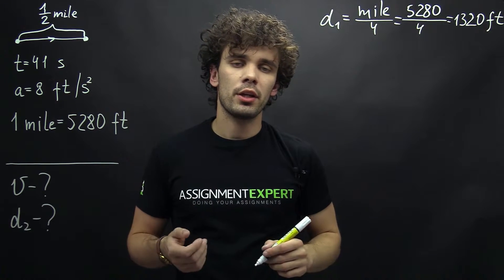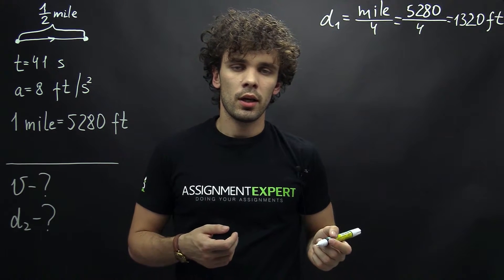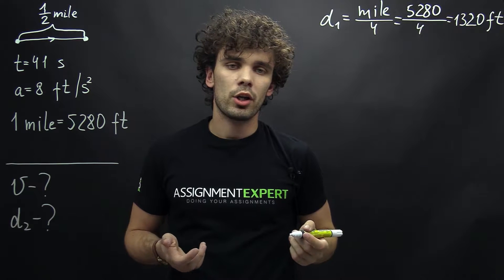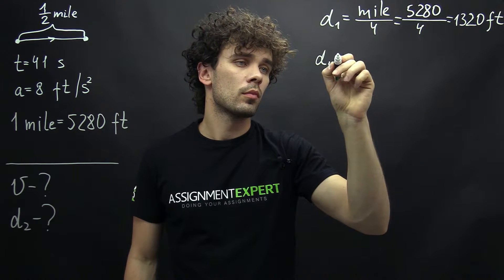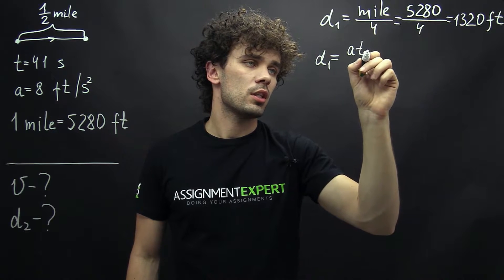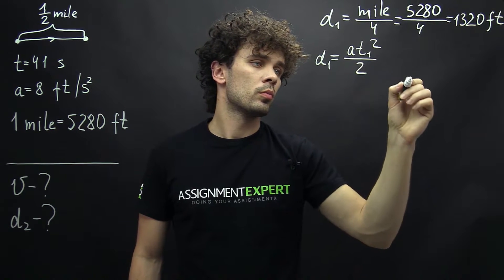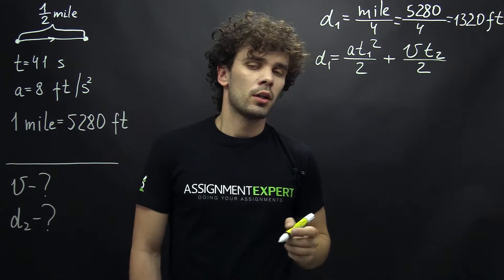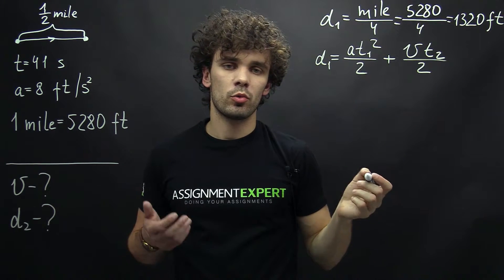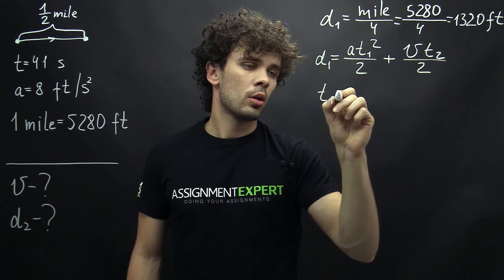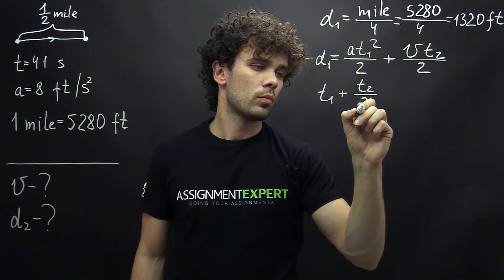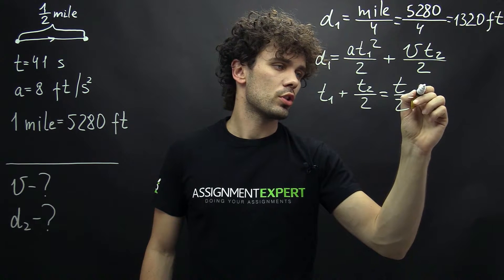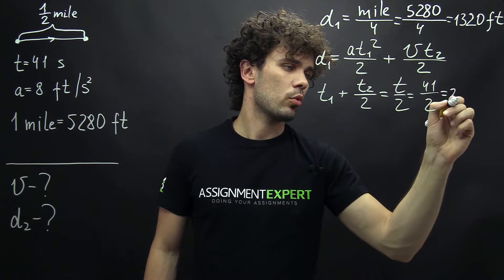Now, let's say that the train needs time T1 to reach max speed, and then during time T2 it covers the distance D2. Using the kinematic equation we can write: D1 equals A times T1 squared over 2 plus V times T2 over 2. The time for halfway between the stations will be T1 plus half of T2, and this equals half of the total time T over 2, which is 41 over 2, giving us 20.5 seconds.